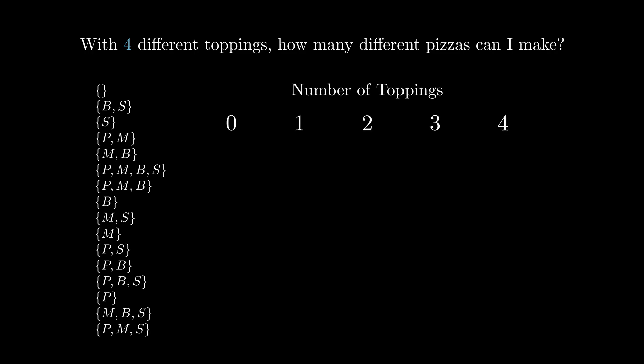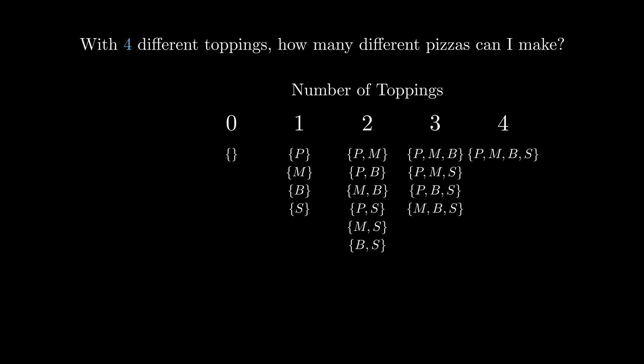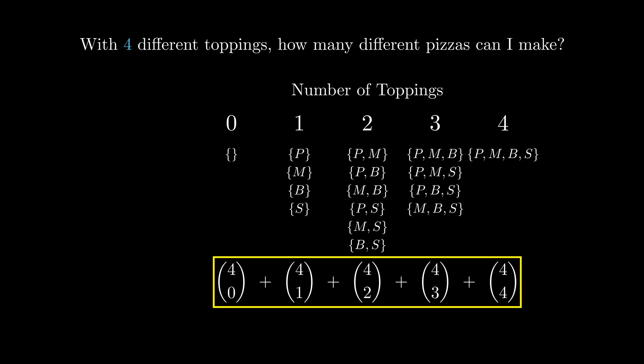Let's group these pizzas by how many toppings there are. While I have all of the possibilities listed here, it's actually very easy to calculate how many belong to each case. For example, the number of ways to select two toppings out of four is simply four choose two. To find our total, all we need to do is add all of these combinations together. Here is our answer.